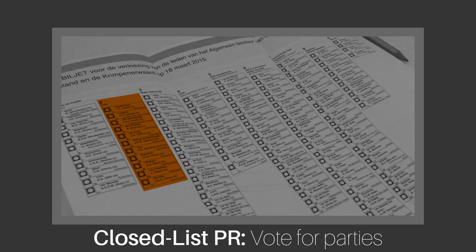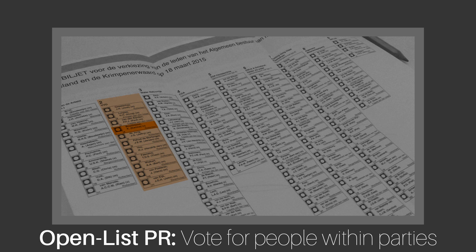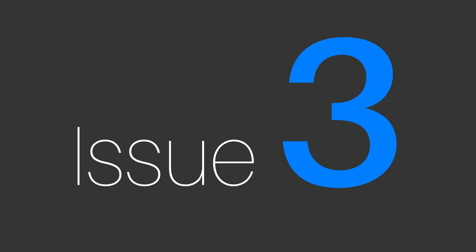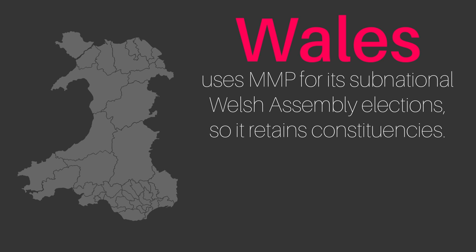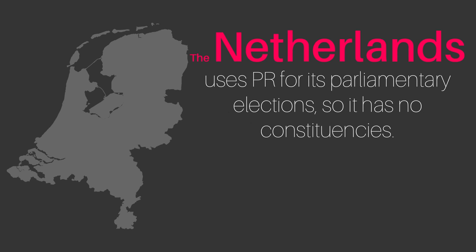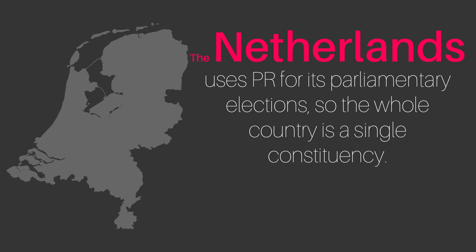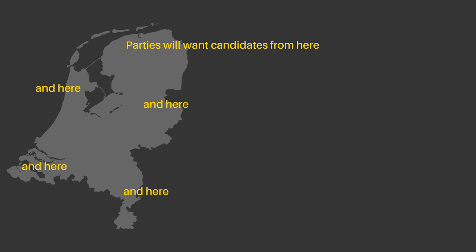Closed list PR doesn't give the voter any opportunity to declare preference for one member of a party over another, whereas open list PR does, giving back some of the ability to vote for individual candidates. A third and final issue with proportional representation is that it doesn't tend to create local members of parliament. Aforementioned mixed member PR retains constituencies, so there is still some geographical link between voters and members of parliament, but all true PR systems get rid of constituencies altogether — or put another way, they treat the entire country as if it were a single, giant constituency. While it is still in parties' best interest to appeal to geographically diverse voters, there's no system in place that enforces local representation, like there is with first-past-the-post.